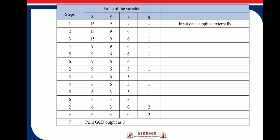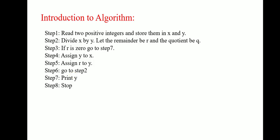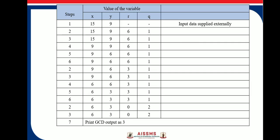Step 3 is, we will check whether R is 0 or not. Step 3 is, if R is 0, go to step 7. Else, go to step 4, which is assign Y to X. Step 5 is, assign R to Y and go to step 2.